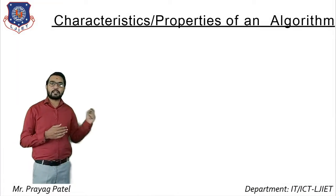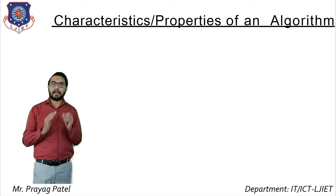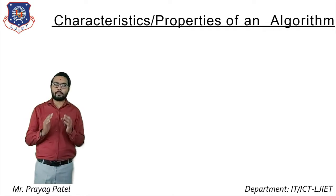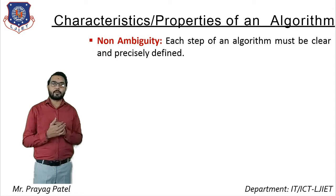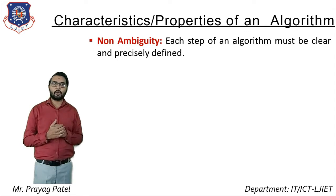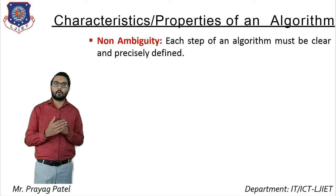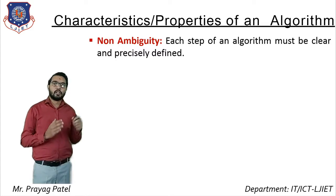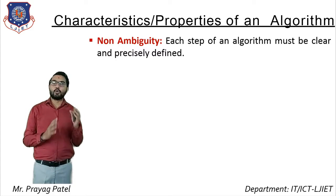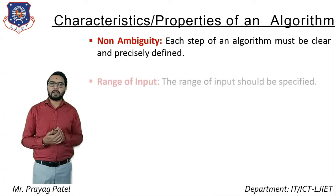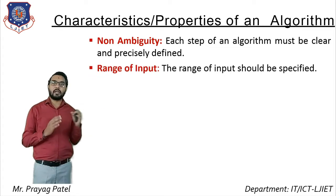Now consider the characteristics or properties of an algorithm. The first property is non-ambiguity. Non-ambiguity means each step of an algorithm must be clear and precise — each instruction should be clear and unique, with no conflicting meaning.